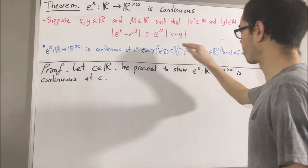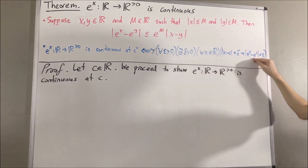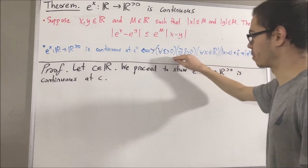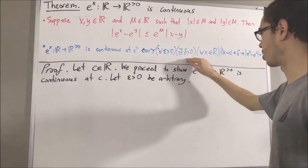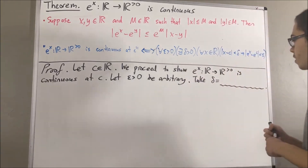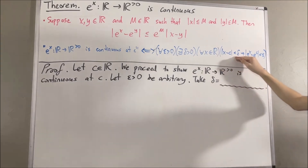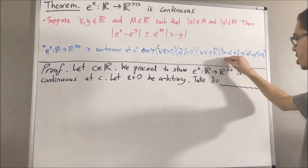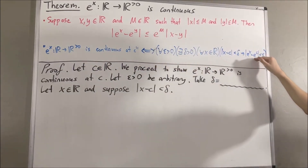What does it mean for the exponential function to be continuous at c? By definition of continuity, it means the following: for every epsilon greater than zero, there exists a delta greater than zero such that for all x in the real numbers, if the absolute value of x minus c is less than delta, then the absolute value of e^x minus e^c is less than epsilon. Since we're trying to prove a statement about every epsilon greater than zero, let's give ourselves an arbitrary epsilon greater than zero. We want to find a delta greater than zero such that this is true. Let's pretend as though we've already figured out what to choose delta to be, and with this choice of delta, we want to show for all x in the real numbers: if |x - c| < delta, then |e^x - e^c| < epsilon. So let's give ourselves an arbitrary x in the real numbers such that |x - c| < delta.